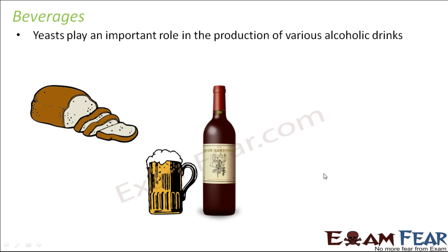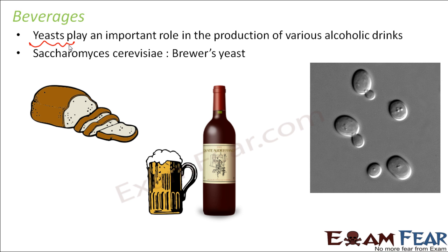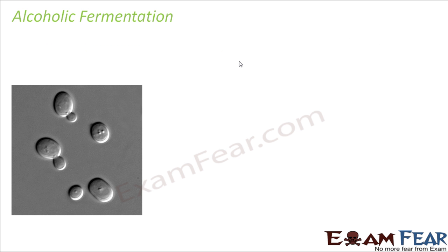Yeasts play an important role in the production of various alcoholic drinks. When you talk about alcoholic drinks, it could be beer, whiskey — there are many different types of drinks available, and yeasts play a very important role in their preparation. The yeast commonly used for this purpose is Saccharomyces cerevisiae, also used as a raising agent in most bakery items. It is often called the brewer's yeast because of its application in the preparation of alcohol.